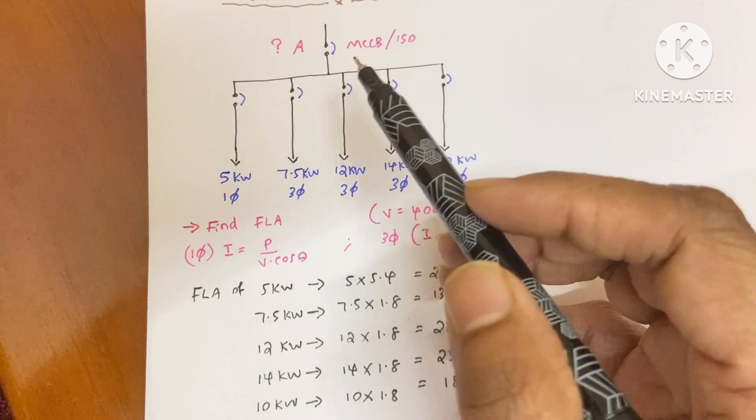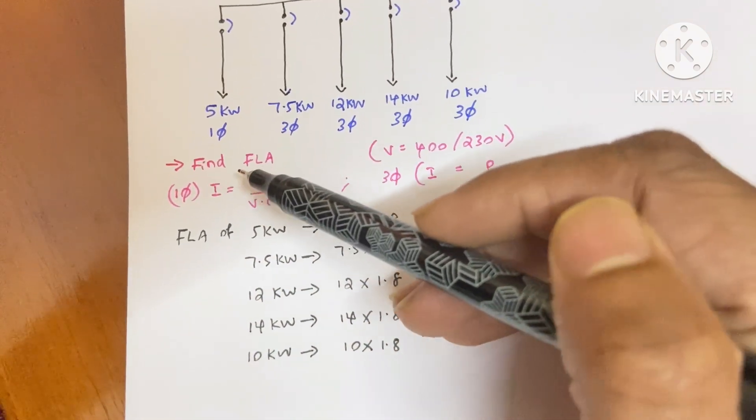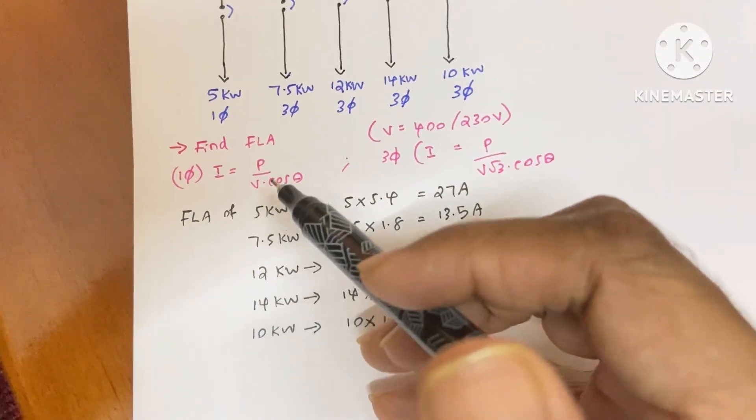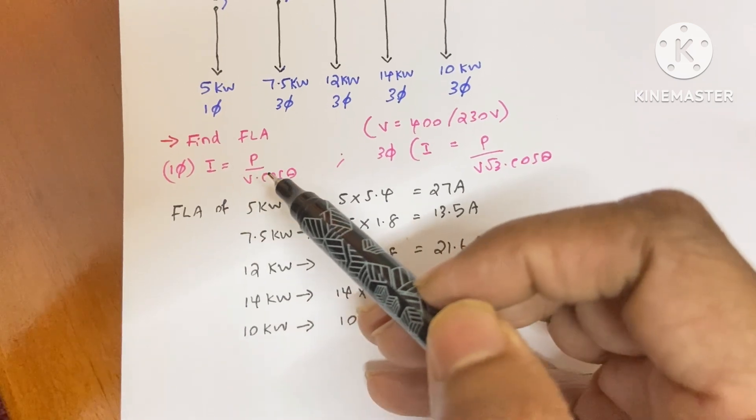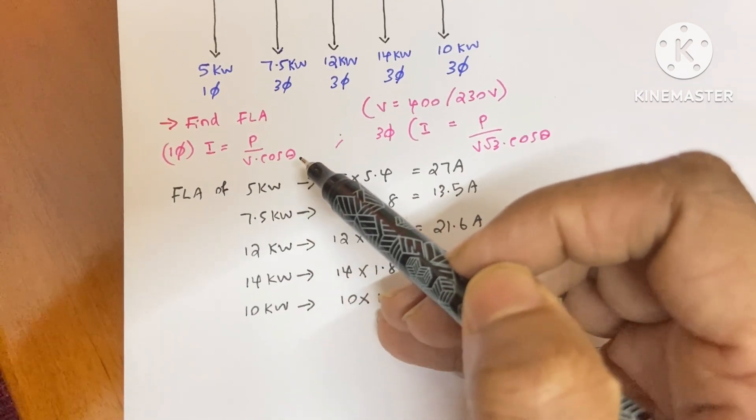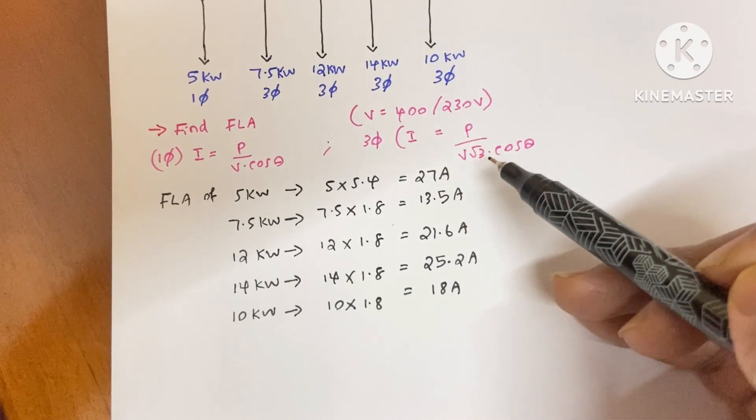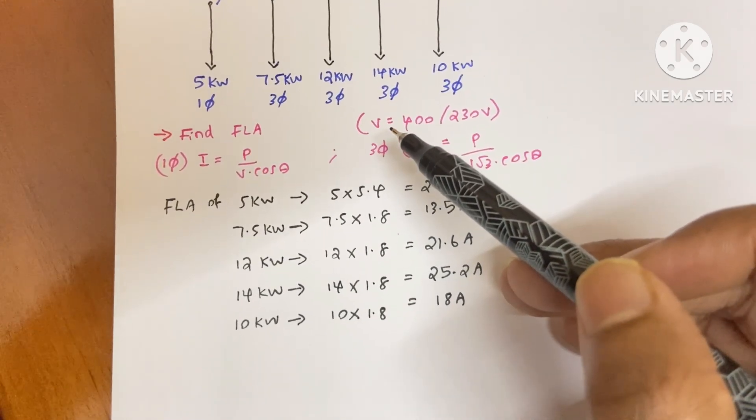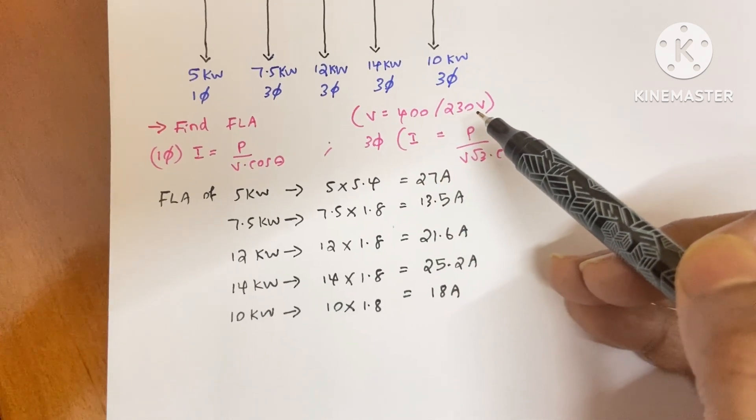To find the incoming breaker size, first we need to find the full load ampere of all these motors. For single phase, the equation is I equals P by V into cos theta. And for three phase, I equals P by V root 3 into cos theta. Here our voltage for three phase is 400 and for single phase is 230 volt.